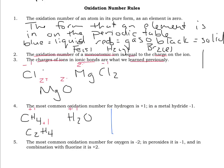There is one exception: when hydrogen is in a metal hydride, it's going to have a minus one charge. How do you tell if it's in a metal hydride? The clue is very simple — the hydrogen is with a metal. For example, lithium hydride: the charge on the hydrogen is going to be minus one. Magnesium hydride — again, it's with a metal — minus one.